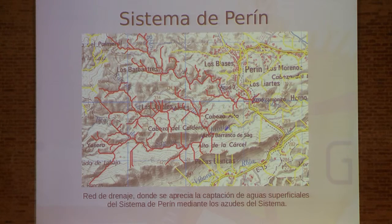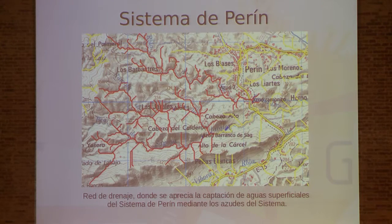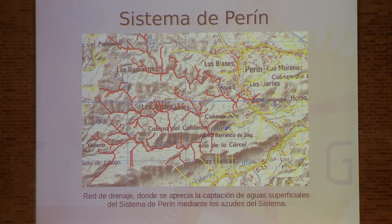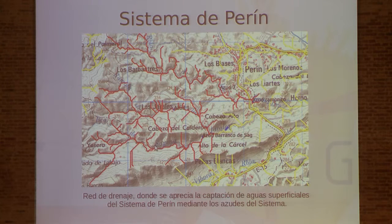Then we have a digital surface model. Based on this, we have the drainage system — the drainage network in this basin — in order to see if it was possible to collect the whole water system. We saw that the capture points were located in strategic areas, and that with only four barrages they could collect all the water from Los Barbastres, Los Garales, and the Sahena.